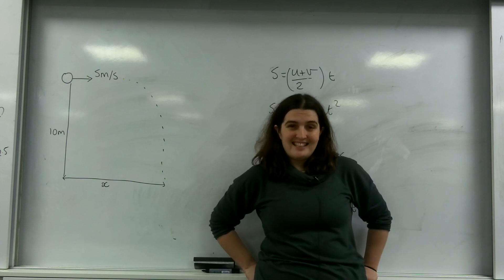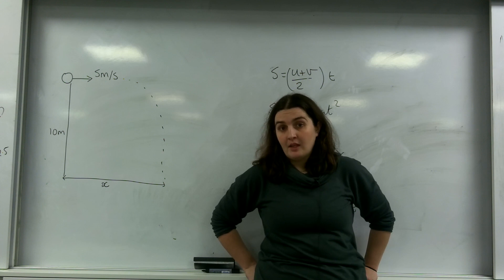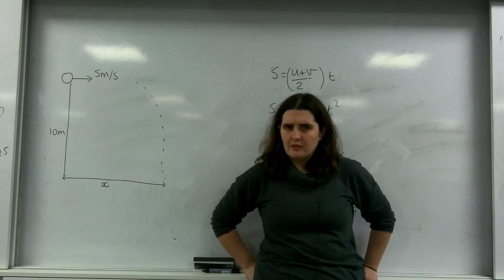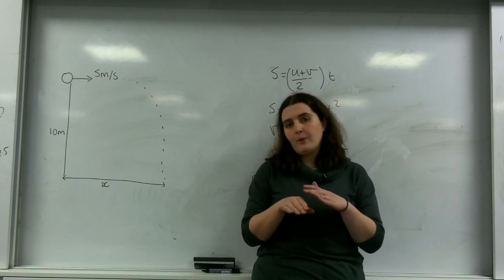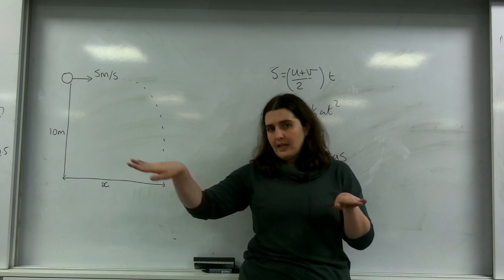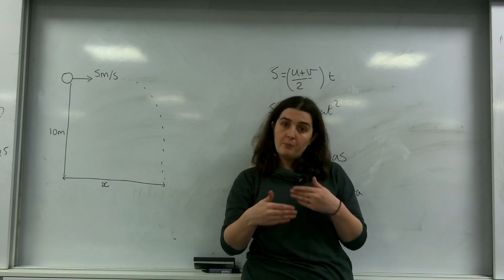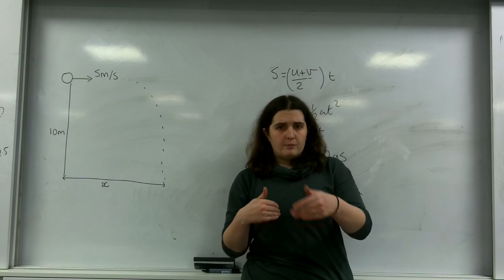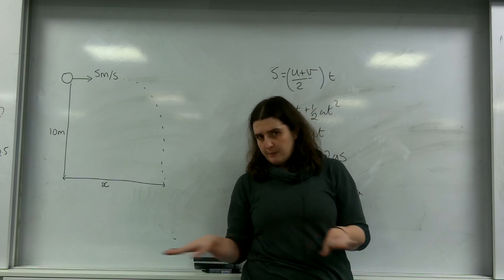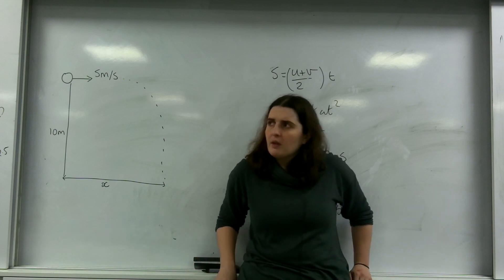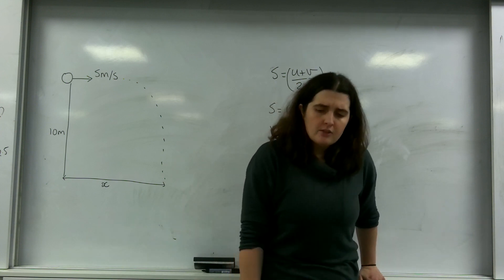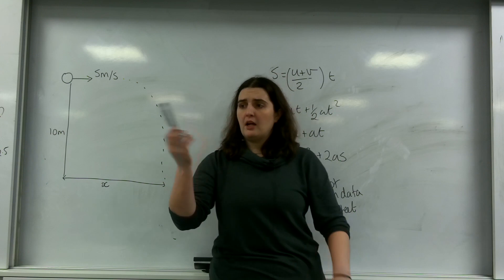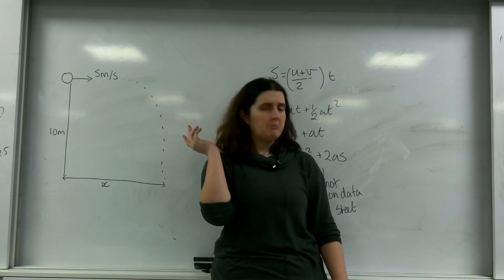Projectile motion is an extension of SUVAT. In normal SUVAT equations we only look in one axis. For example, if we're talking about a penguin coming off a glacier or a car stopping, that is acting in one axis — the X plane. I'm now going to talk about things that are moving in both X and Y, so more of something being flung that way.